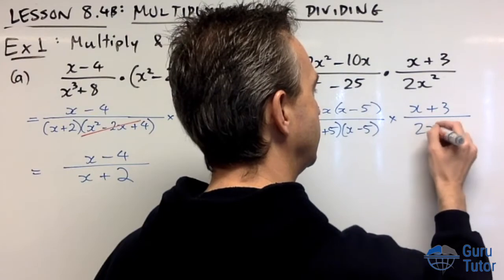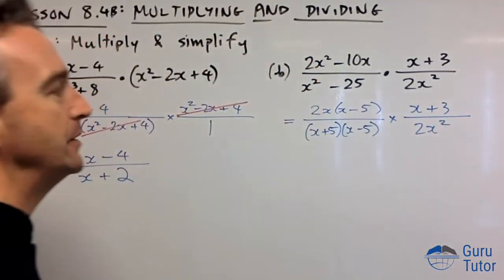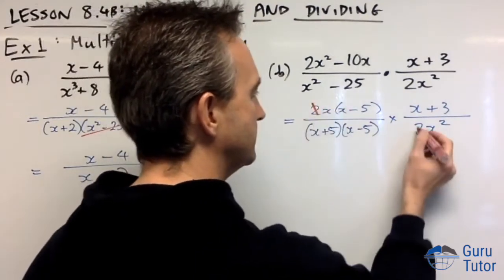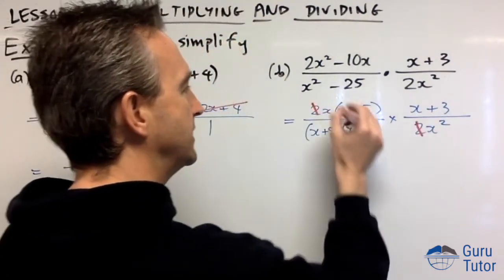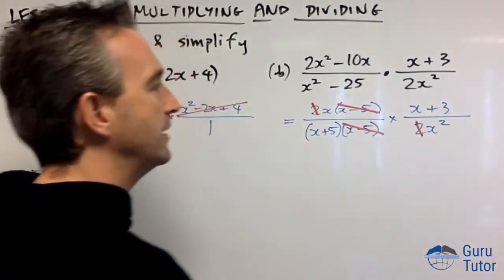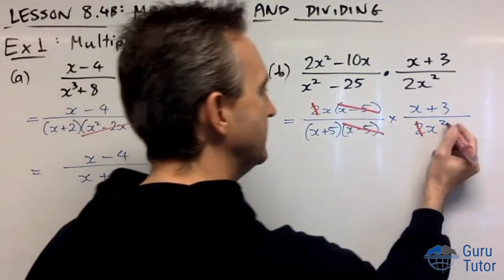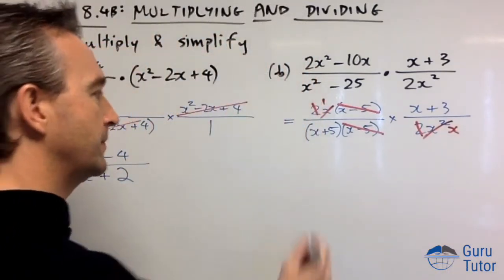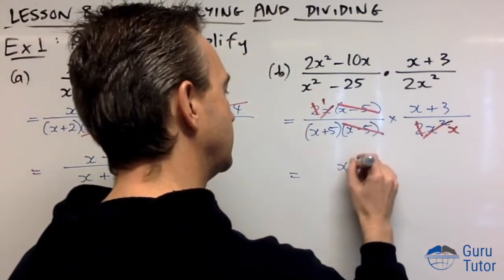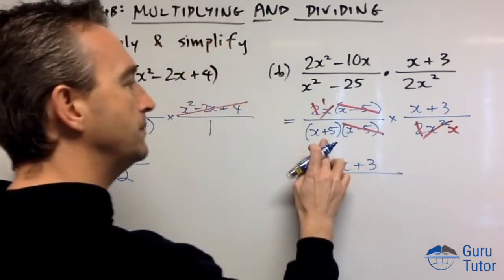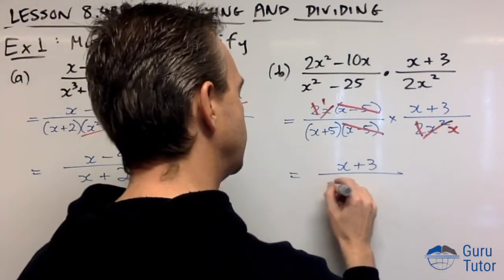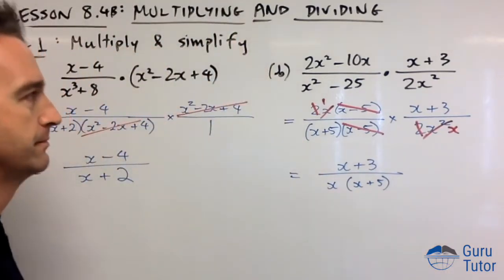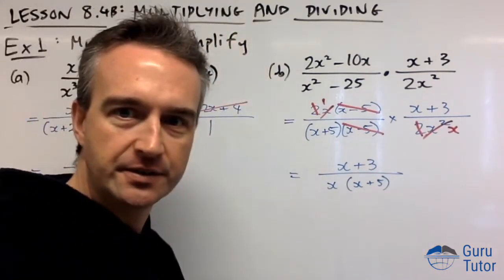Times (x+3)/(2x²). What can we cancel? We can cancel vertically or diagonally. Cancel the 2, cancel x-5, and we've got x times x here. That will cancel with one x, leaving one x on the bottom. Final answer: (x+3)/(x(x+5)). We usually leave the bottom factored if possible. I just dropped my marker - did you hear that?